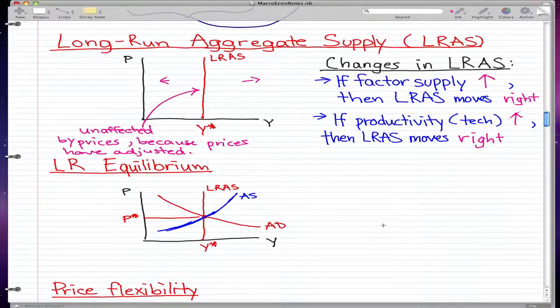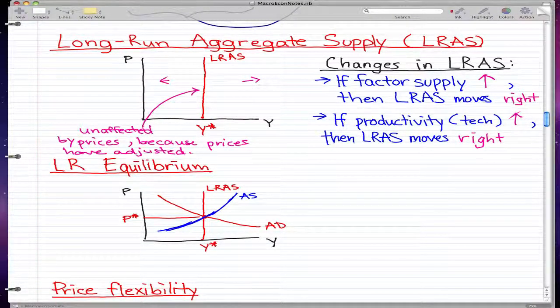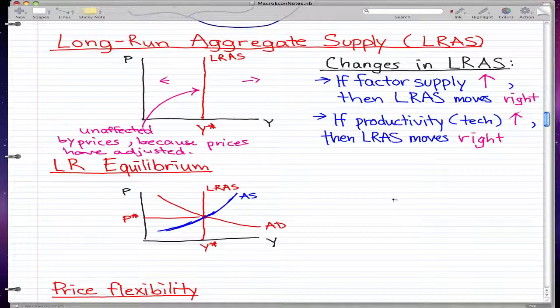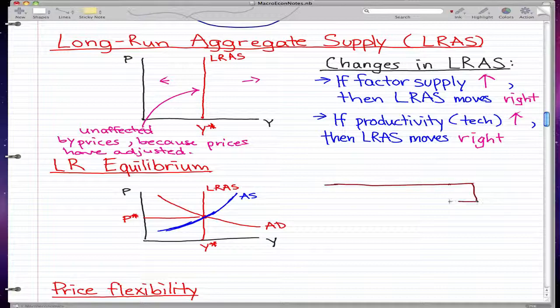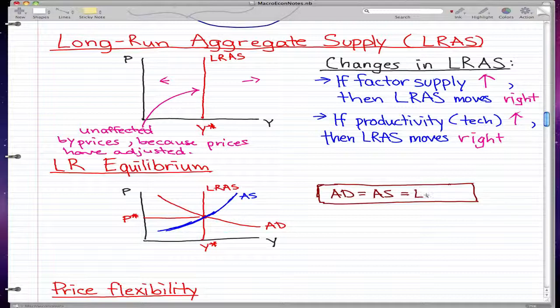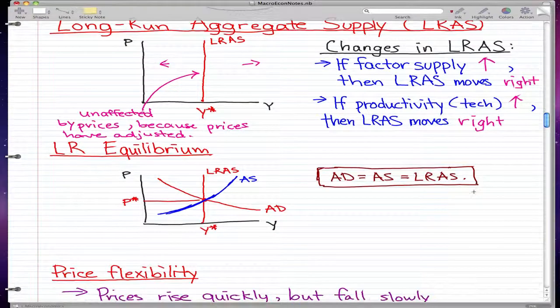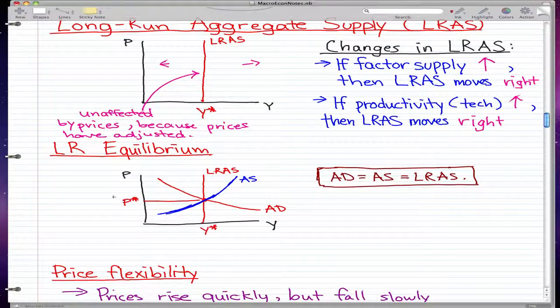And on to long-run equilibrium. I already drew the graph here for you because I draw graphs kind of slow and I don't want to waste your time. One point I want to make is that the aggregate demand is equal to the aggregate supply, and that is equal to the long-run aggregate supply.